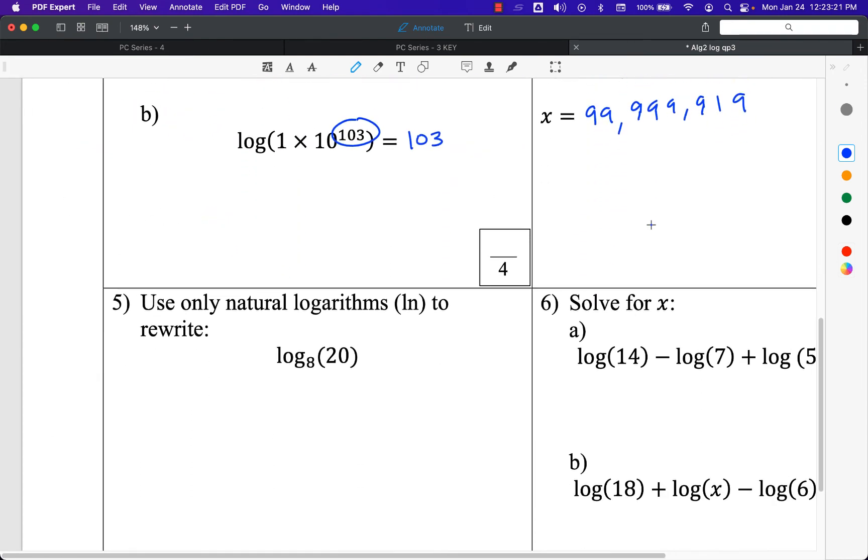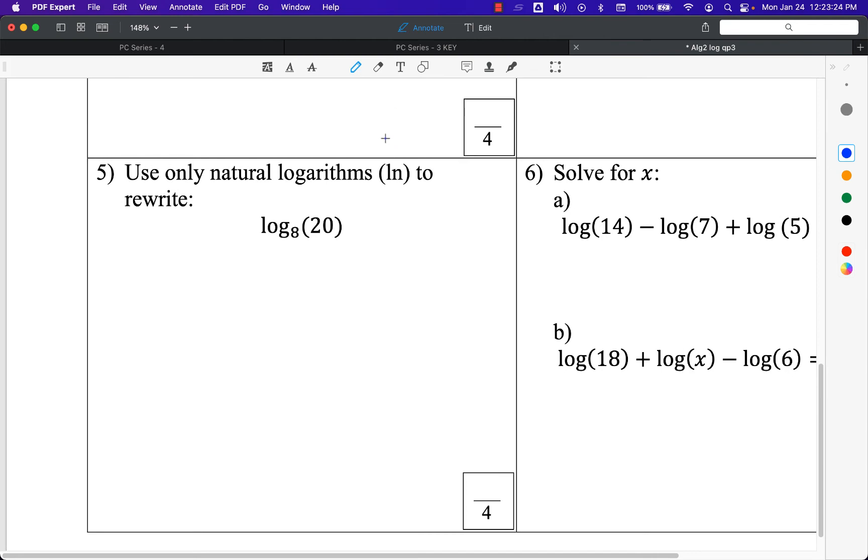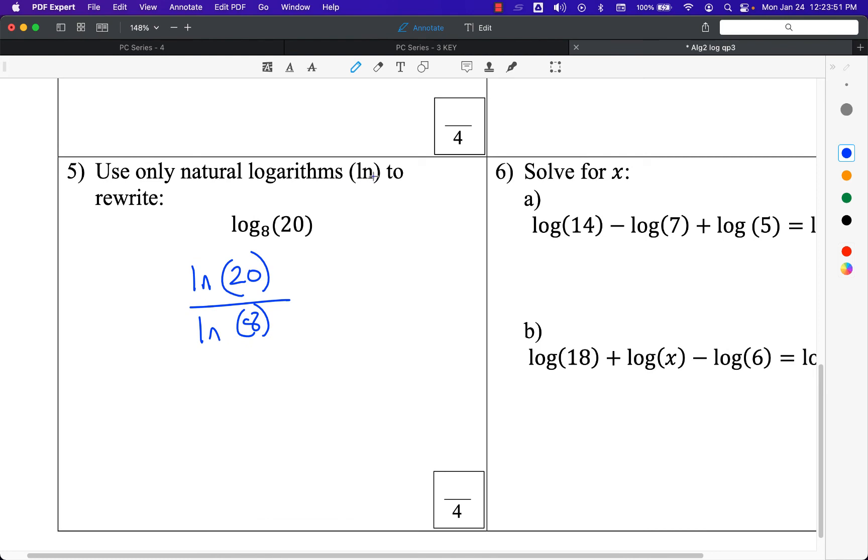Number 5, rewrite using only natural logarithms, a.k.a. ln, to rewrite this thing. Normally, we rewrite this with log base 10, but now I'm forcing you to use log base e. This is the change of base formula. You just say it's natural log of the inside, natural log of 20, divided by the natural log of the base here, 8. It's always going to be that same order over and over. This base can be whatever you want it to be, as long as that base is the same thing for the numerator and the denominator.